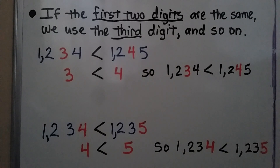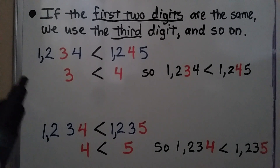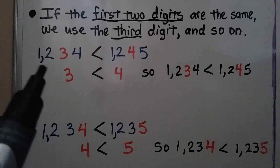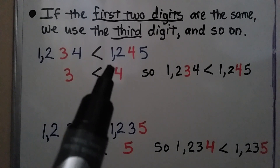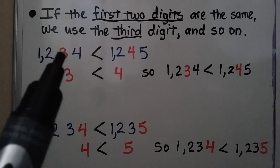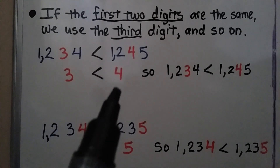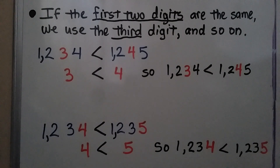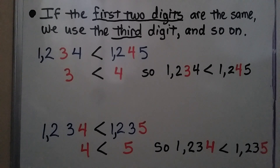And if the first two digits are the same, we use the third digit, and so on. This one starts with a one in the thousands place, a two in the hundreds place, but so does this one. We look at the tens place — this has a three, this has a four. Three is less than four, so 1,234 is less than 1,245.